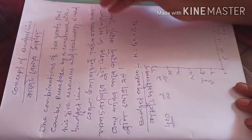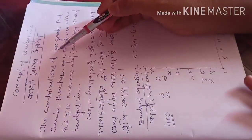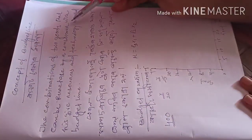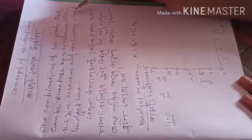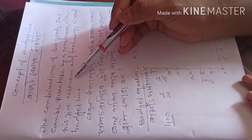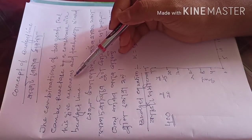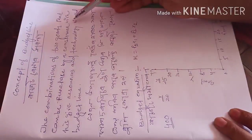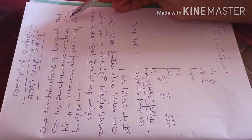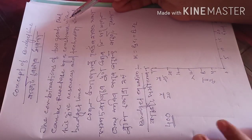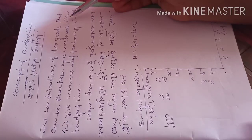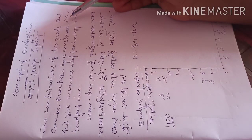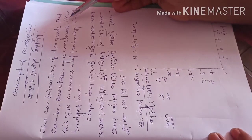Now, the budget line — the meaning of the budget line is the combinations of two goods that can be purchased by a consumer with his given resources and technology, and that is called the budget line. If you draw this combination on a graph, then it will be known as the budget line.